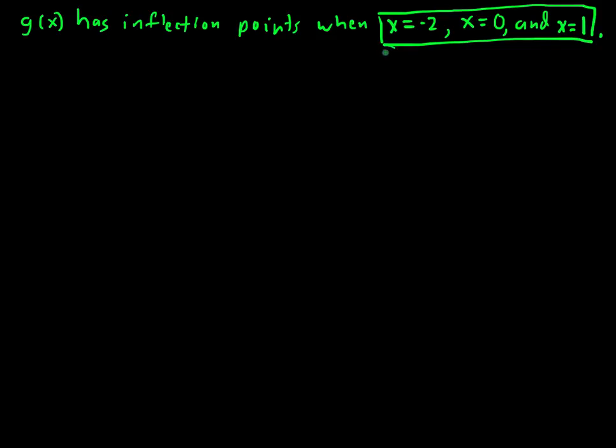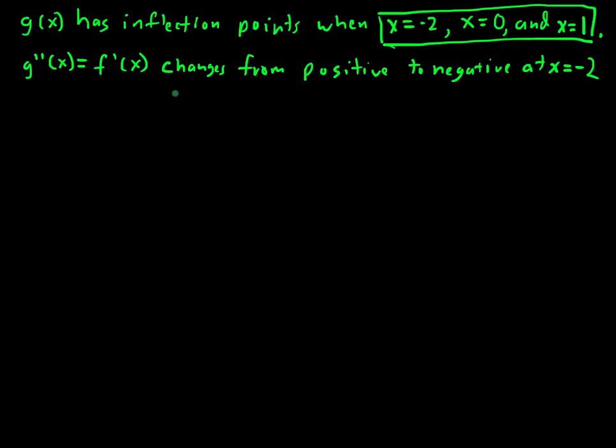And I'll be a little bit looser with the notation. So what I can say is g double prime of x equal to f prime of x changes from positive to negative at x equals negative 2. And I could have done the same argument saying this is the interval where it's positive, this is the interval where it's negative. It's a little faster, not quite as clear, but it should get the points, especially with just an explanation.